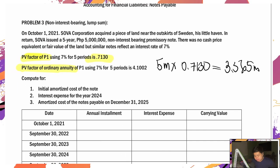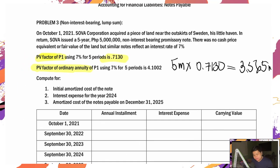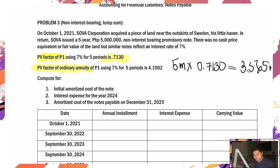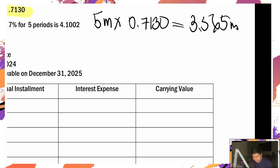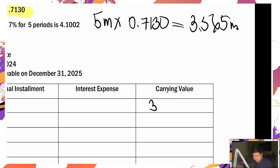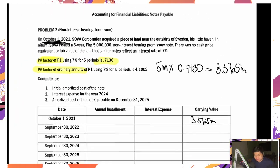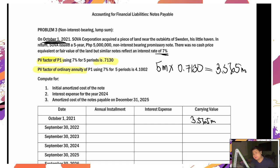Yan na yung carrying value ko — nung bagong issue which was on October 1, 2021. So ilalagay ko sa amortization table yan. Ano pala ang ating effective interest rate? 7%. Yan yung pinagunan ng ating present value.